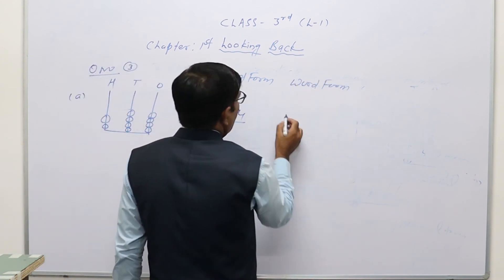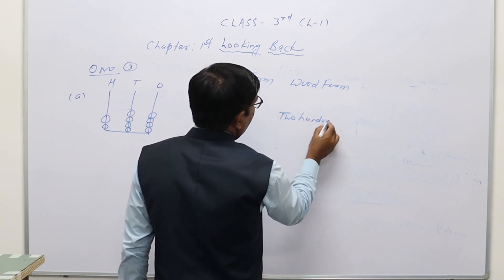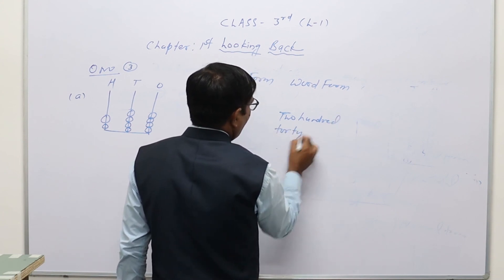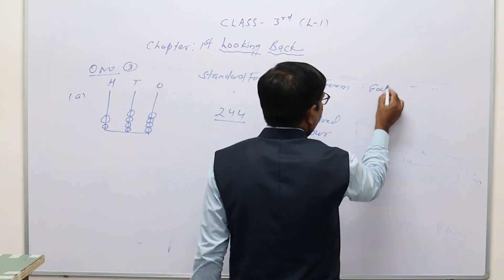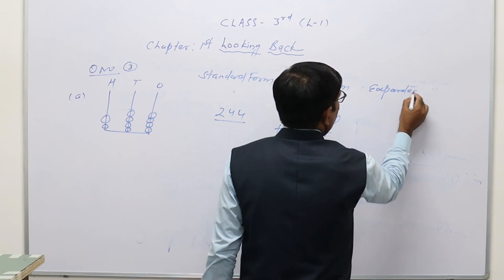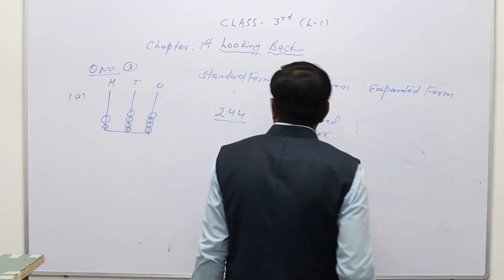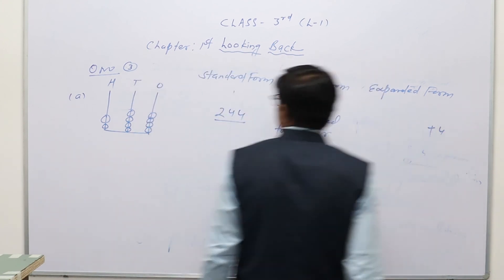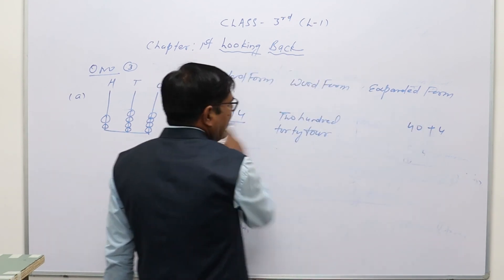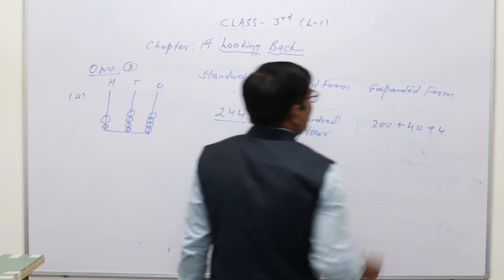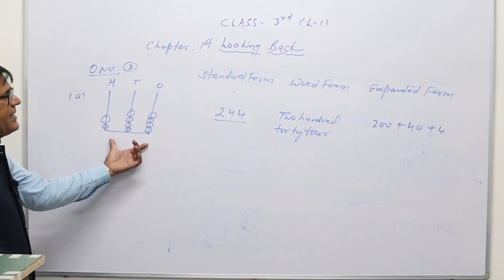In word form, 244 is written as two hundred forty-four. In expanded form: the place value at ones is 4, at tens is 40, and at hundreds is 200. So the expanded form is 200 + 40 + 4.